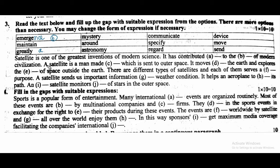A satellite is a man-made device. So this is C — a man-made device which is sent to outer space. It moves around the earth and explores the...